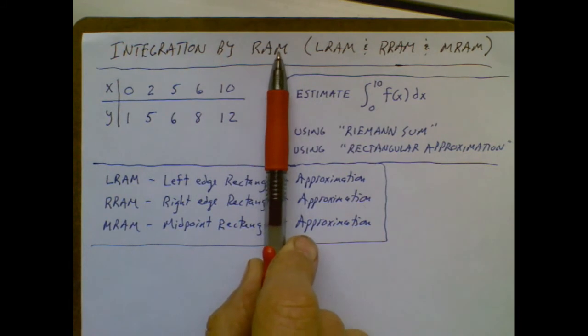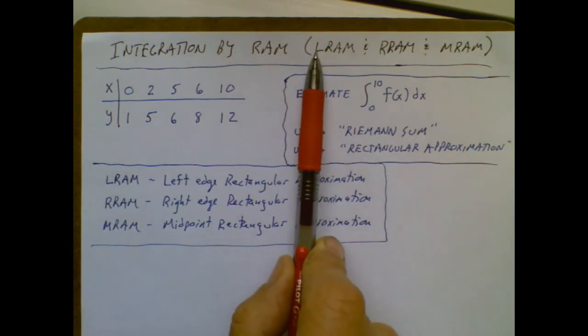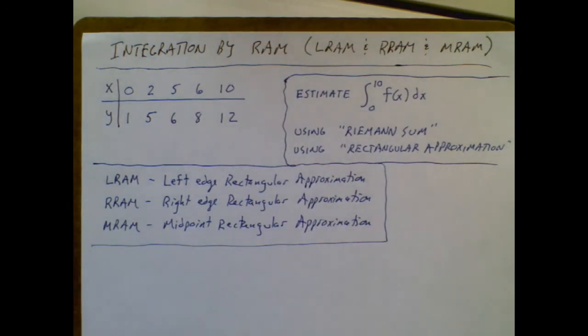And the three methods we're going to focus on is an LRAM, RRAM, and MRAM. L standing for left, R standing for right, and M standing for midpoint.